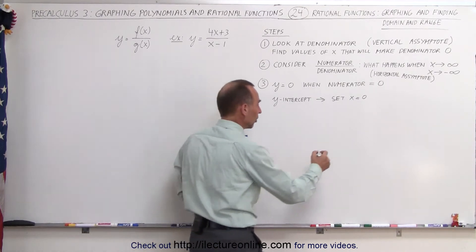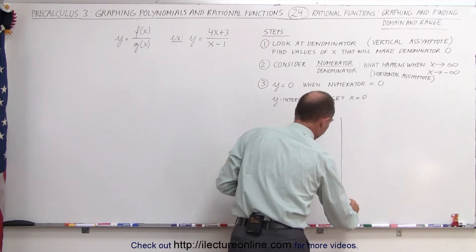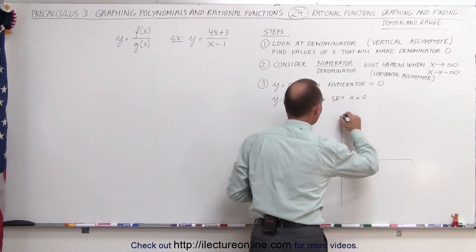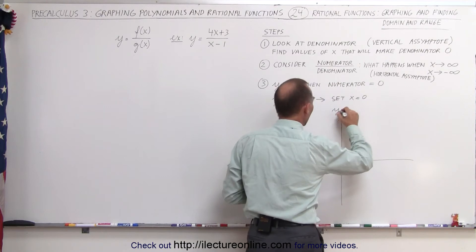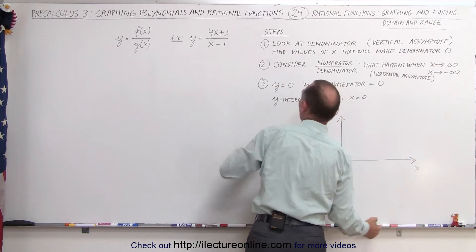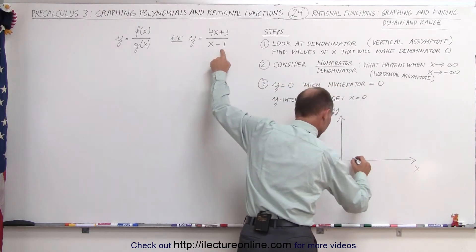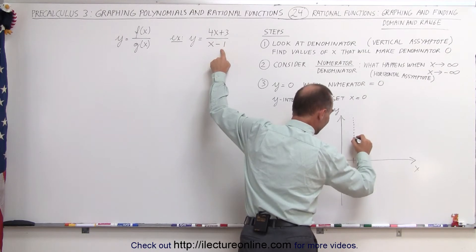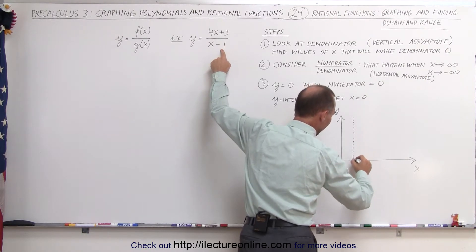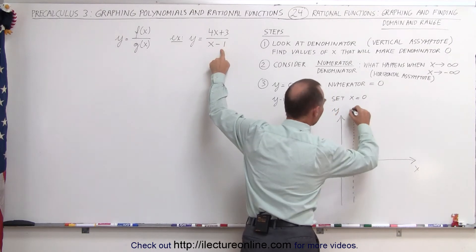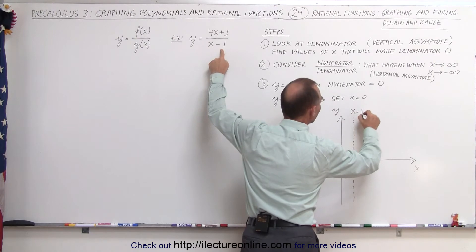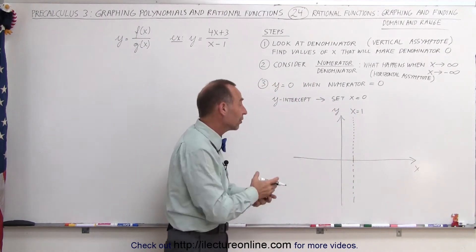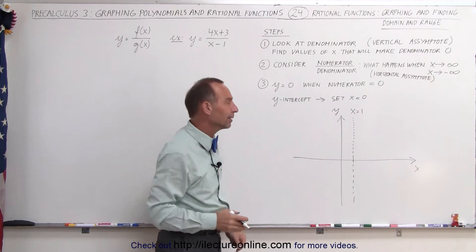Let me go ahead and start the graph. There's our y-axis and here's our x-axis. When x equals 1, we draw a dashed vertical line there. That dashed line is the line x equals 1, and we know that the function will not cross that line because at that point y will be undefined.